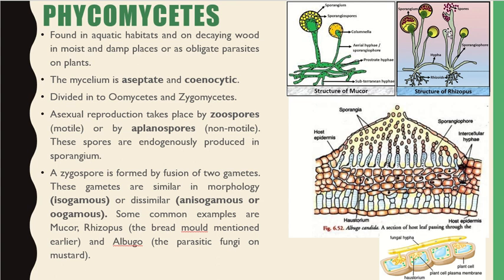These spores are endogenously produced in a sporangium. A zygospore is formed by fusion of two gametes, which may be similar or dissimilar in morphology. If they are similar, they are called isogamous, and if dissimilar, they are called anisogamous. Some examples are Mucor, Rhizopus, and Albugo.